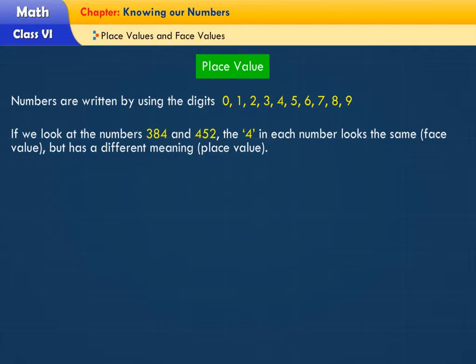If we look at the numbers 384 and 452, the 4 in each number looks the same (face value), but has a different meaning (place value).